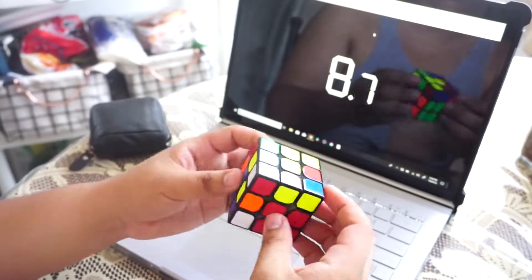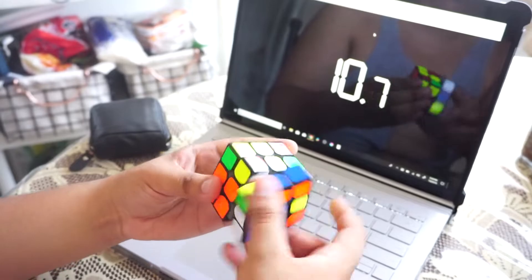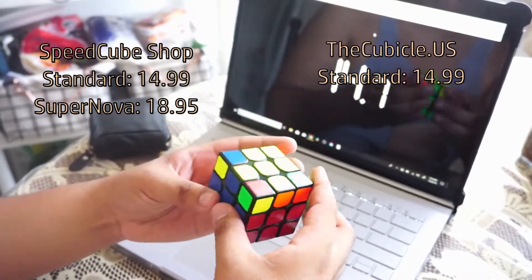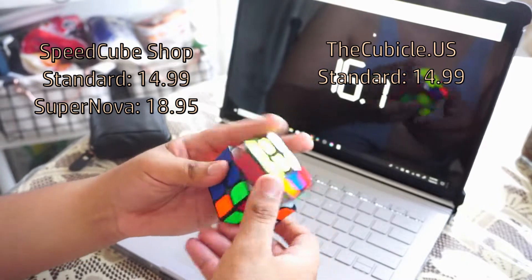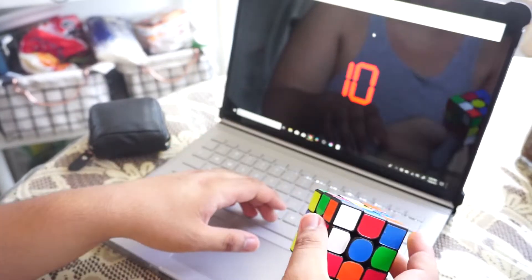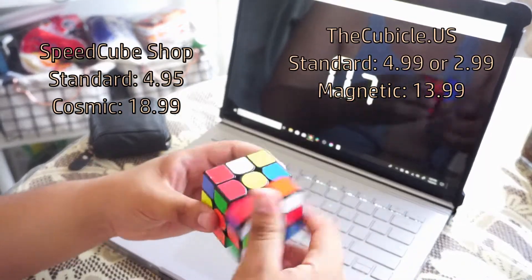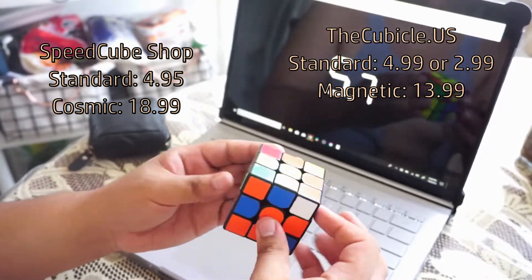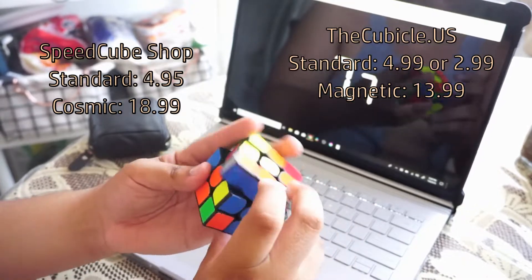So now that we have compared the logistics of this cube, let's talk about the price. From SpeedCubeShop.com, the MGC costs fourteen dollars and ninety-five cents and from TheCubicle.us, it comes from fourteen dollars and ninety-nine cents without shipping costs. The Little Magic from SpeedCubeShop.com is four dollars and ninety-five cents, but as of writing the script on TheCubicle.us, it is two dollars and ninety-nine cents.